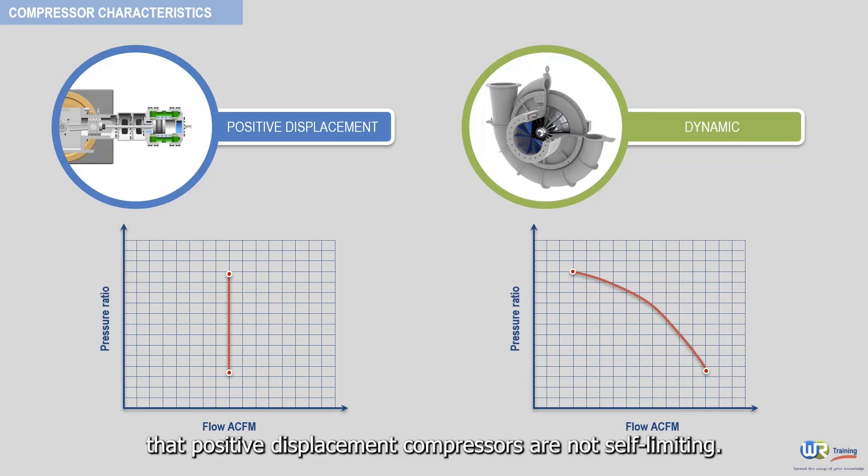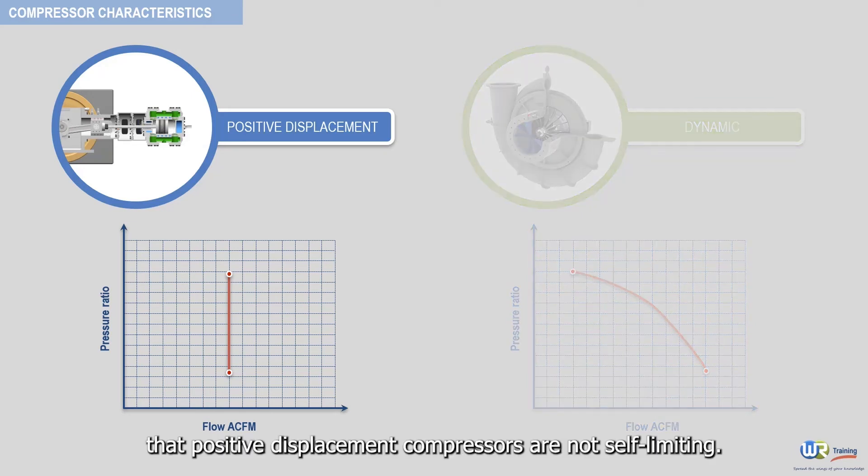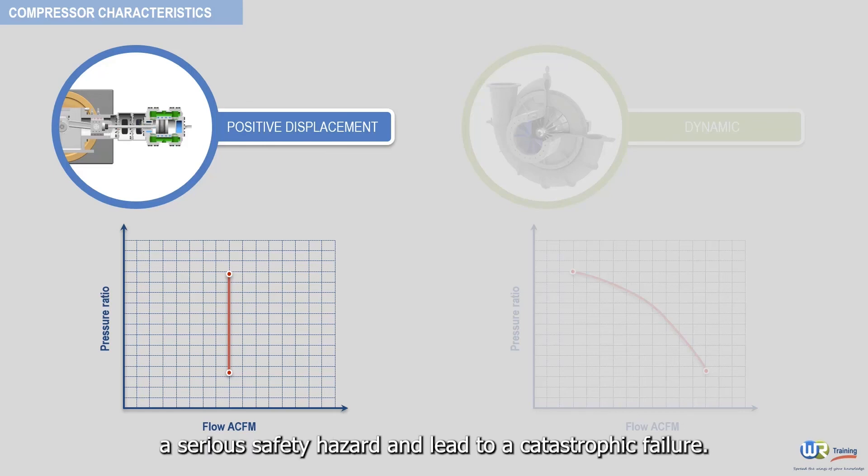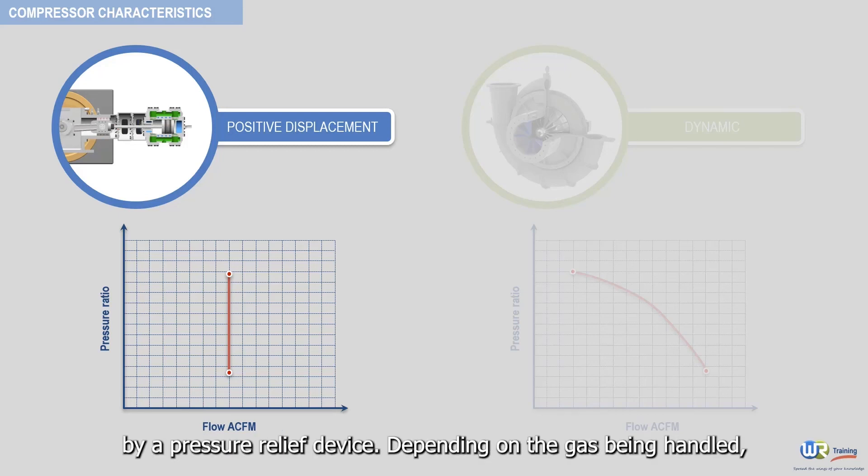Keep in mind that positive displacement compressors are not self-limiting. This means that the pressure ratio will continue to rise until the compressor case pressure is exceeded, which may constitute a serious safety hazard and lead to a catastrophic failure. For this reason, positive displacement compressors are usually protected by a pressure relief device.